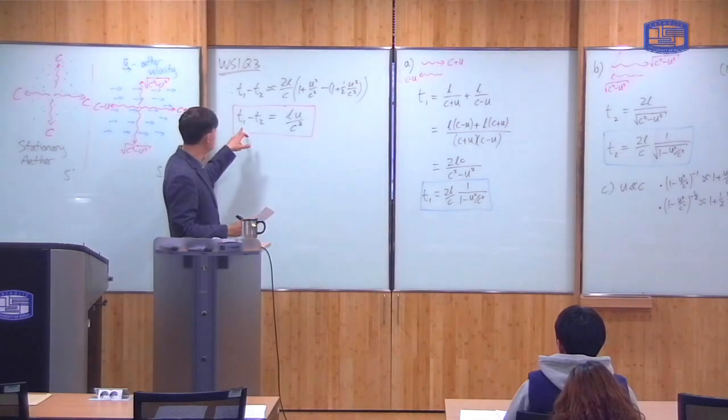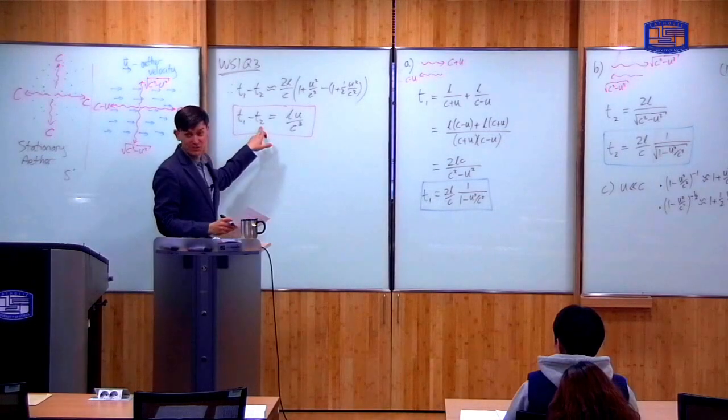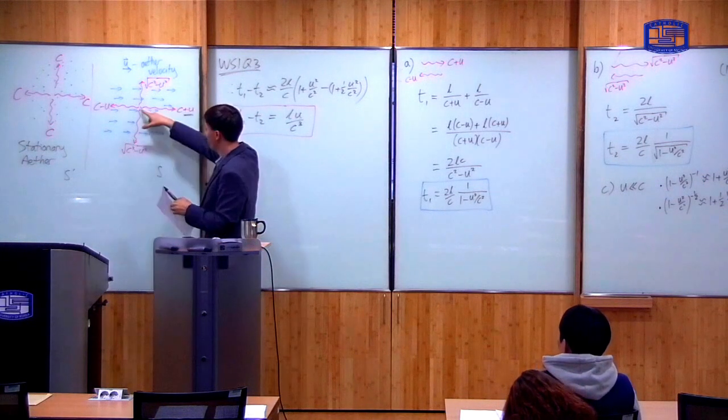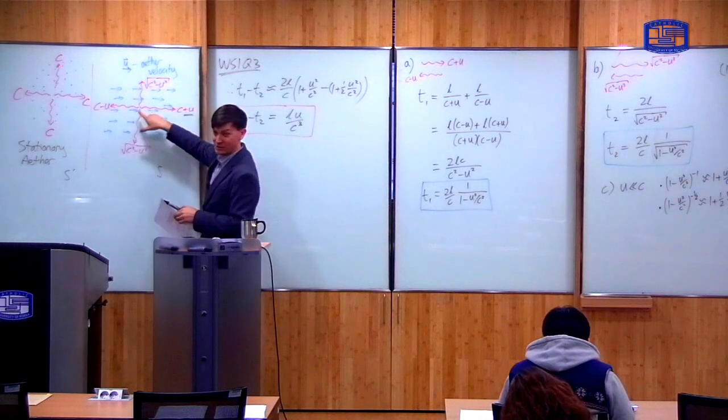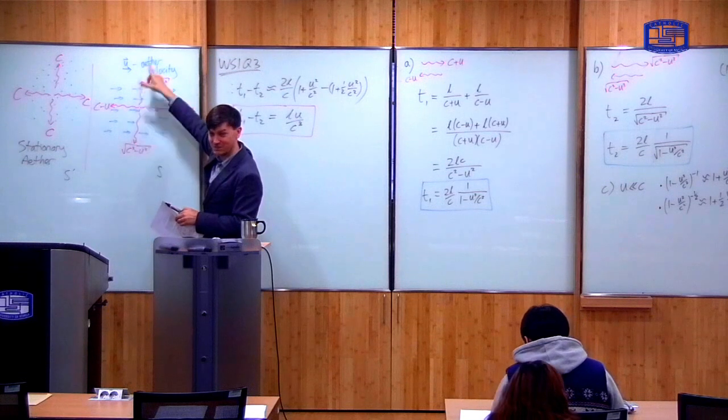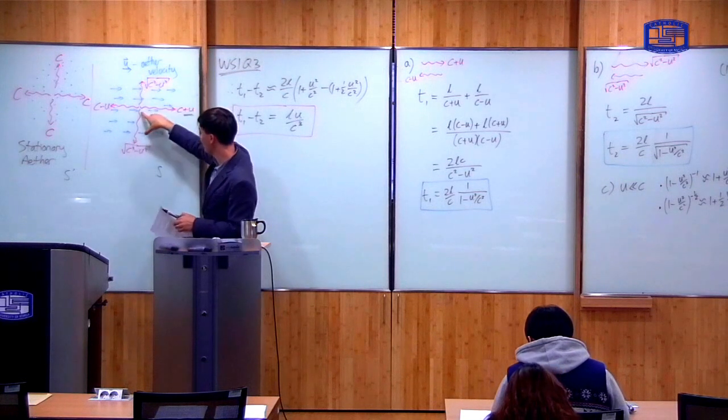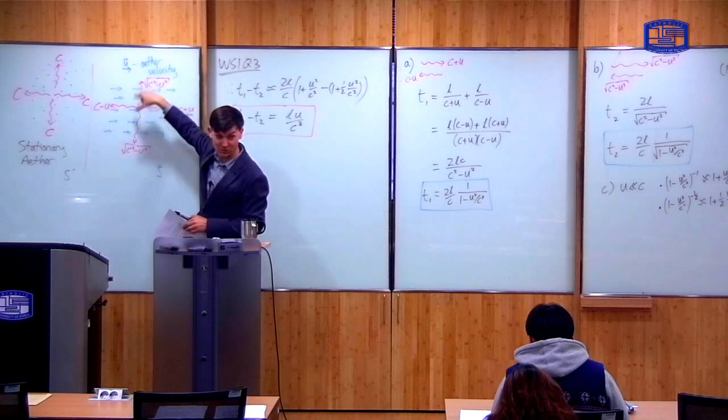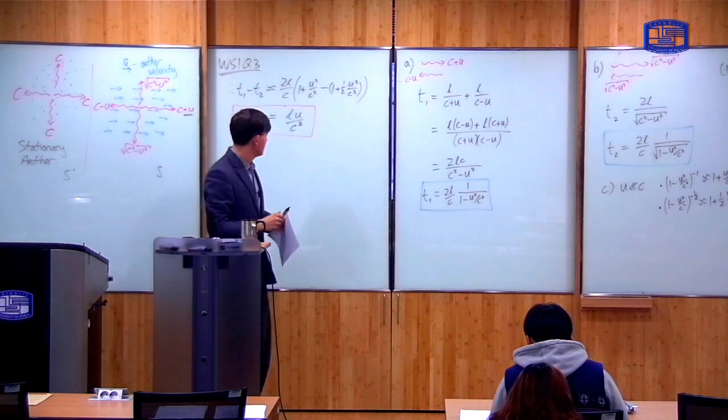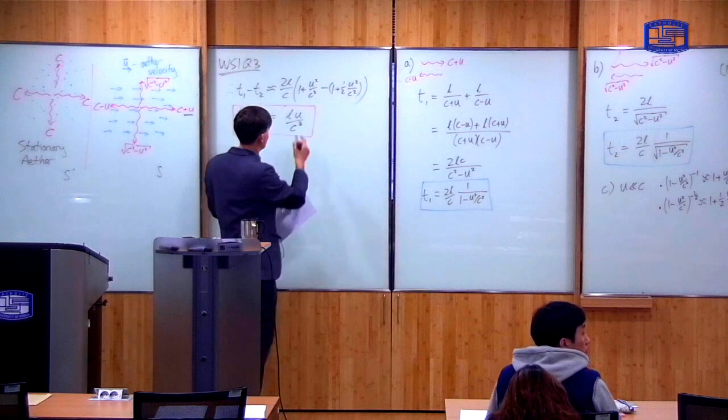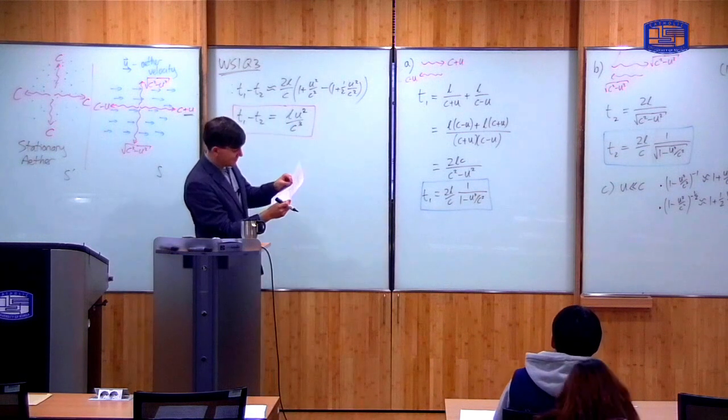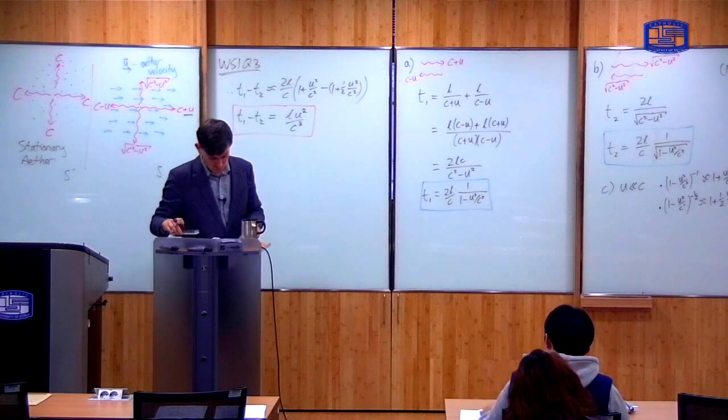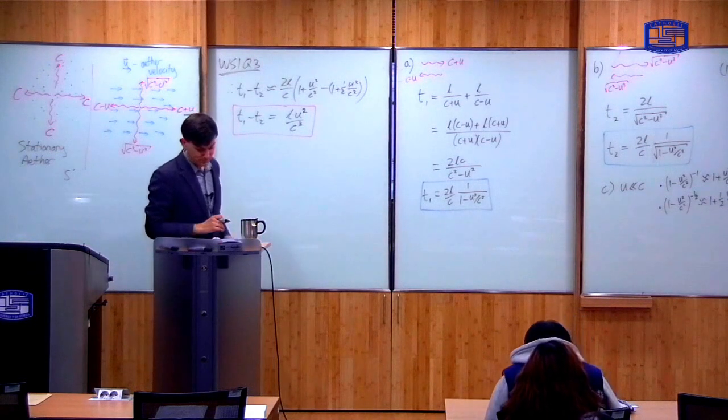So note, in particular, T1 is bigger than T2. So if you're moving parallel with the ether, that's a bit slower than moving this way in total time. T1 was going this way. T2 is going this way. So T1 is bigger than T2. Yes. It is U squared. Thank you. Yeah. It's right on the worksheet.